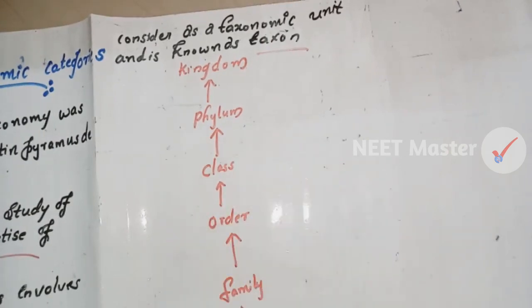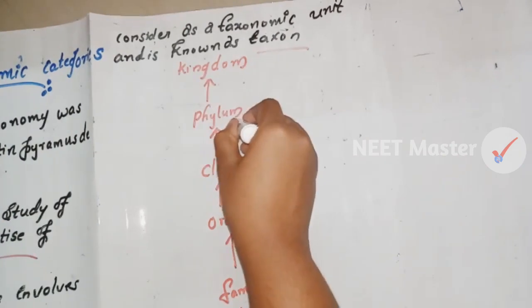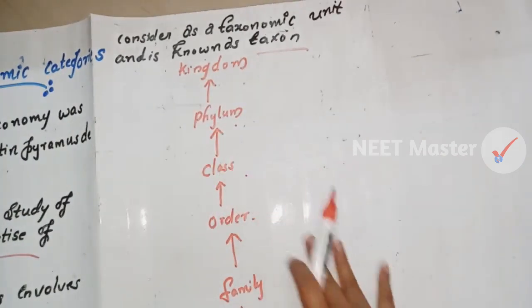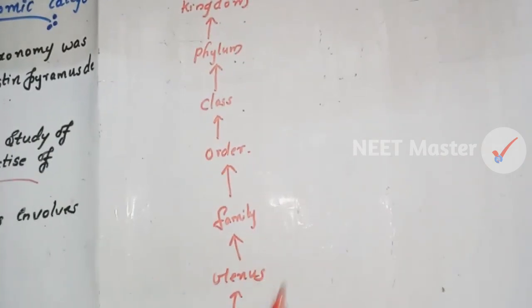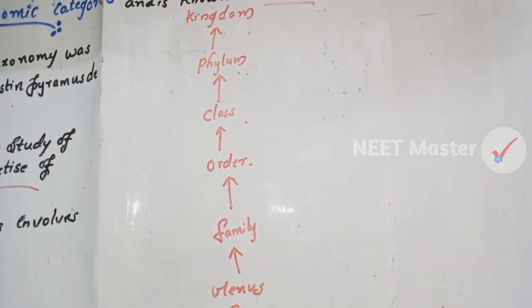The taxonomic categories, from highest to lowest, are: Kingdom, Phylum, Class, Order, Family, Genus, Species. Let us repeat: Kingdom, Phylum, Class, Order, Family, Genus, Species.